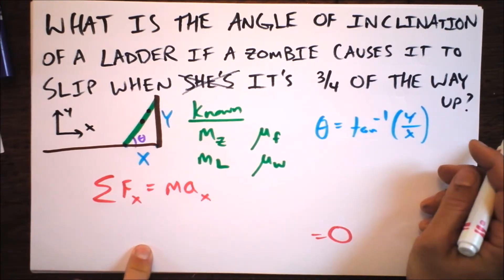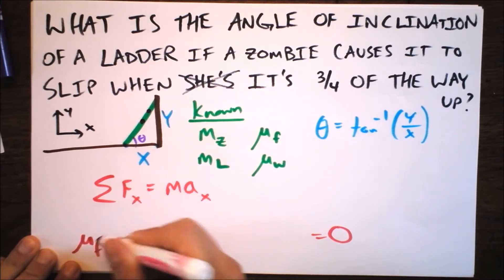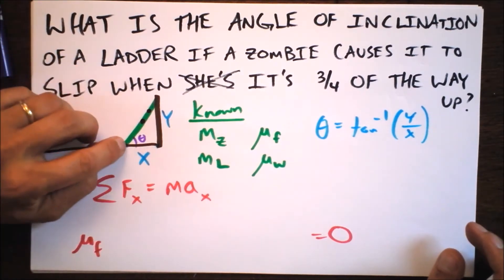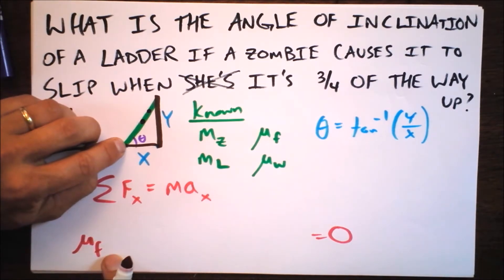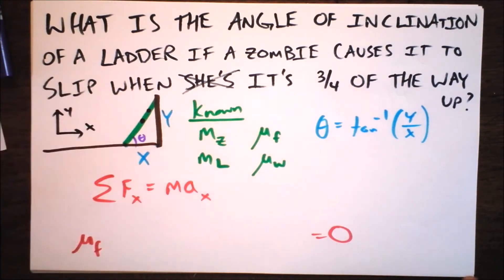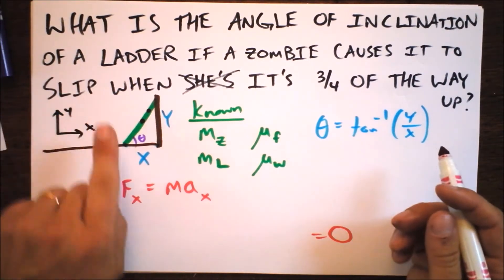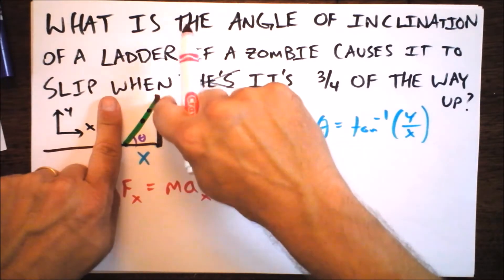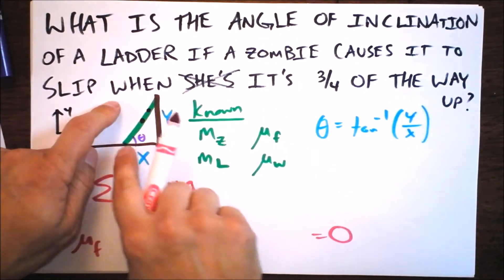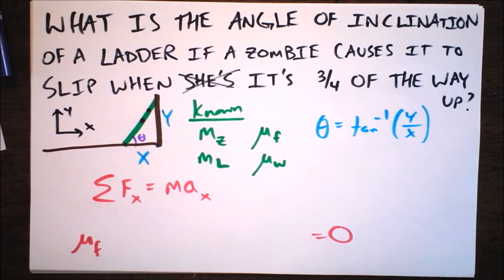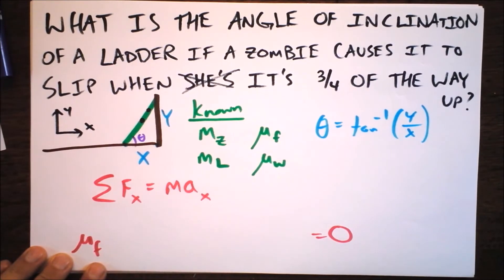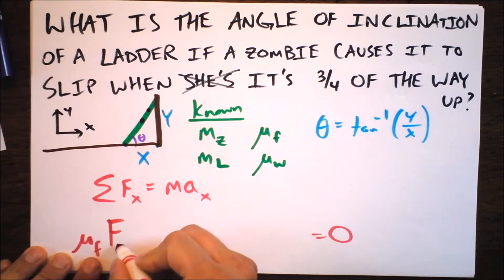I'm doing net force in the x direction equals mass times acceleration in the x direction. I prefer to use this format and explicitly plug in a zero here. My plan initially had been μf times the mass of the ladder plus the mass of the zombie. But that's no good because we can't know what this normal force is. Right now, the normal force has to be specified as a variable.